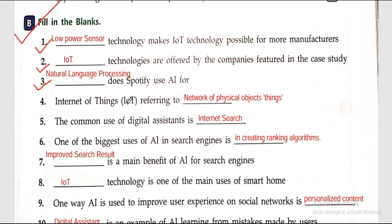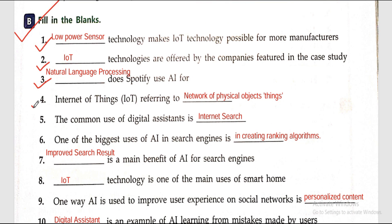Question four: Internet of Things (IoT) refers to networks of physical objects, meaning 'things.' Question five: the common use of digital assistants is internet search. Question six: one of the biggest uses of AI in search engines is in creating ranking algorithms.